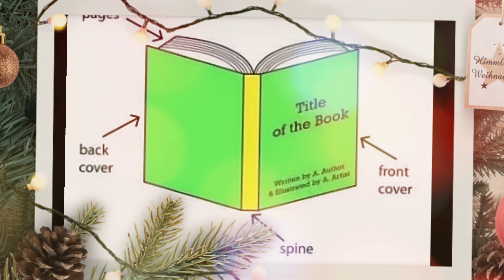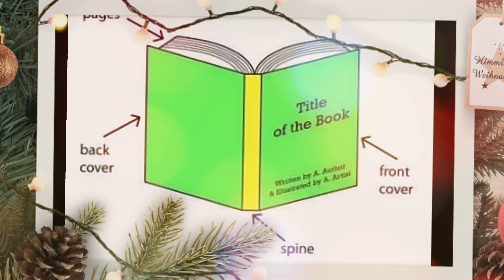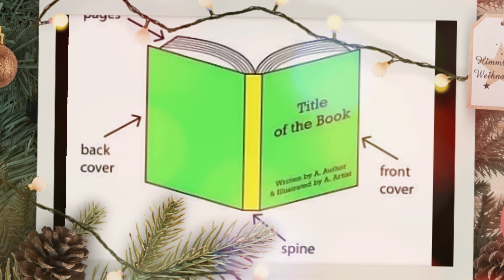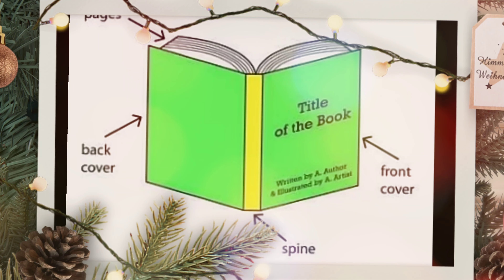The front cover is the front of the book. The back cover is the back part of the cover of a book, which provides a short summary of what the book is about. The spine is the outer portion of a book which covers the actual binding.